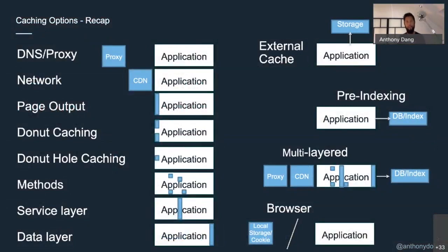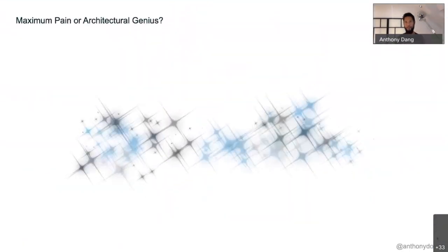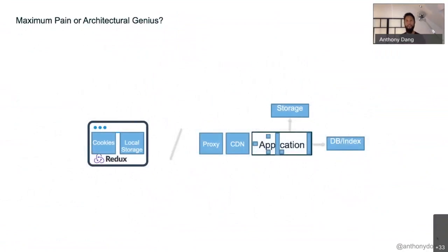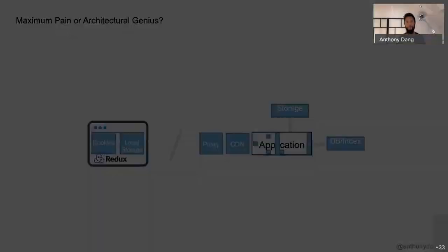Okay, we've talked about Cloudflare, CDNs, HTML output caching, donut caching, donut hole caching, caching just methods in your application — don't do that, causes pain — using dependency injection to cache at the service layer and decouple the cache from your business logic, caching at the data access layer, external cache using Redis, pre-indexing, multi-layered solutions, and browser caching. Would you have an end-to-end solution like this? Maybe — you know where the pain points are now.